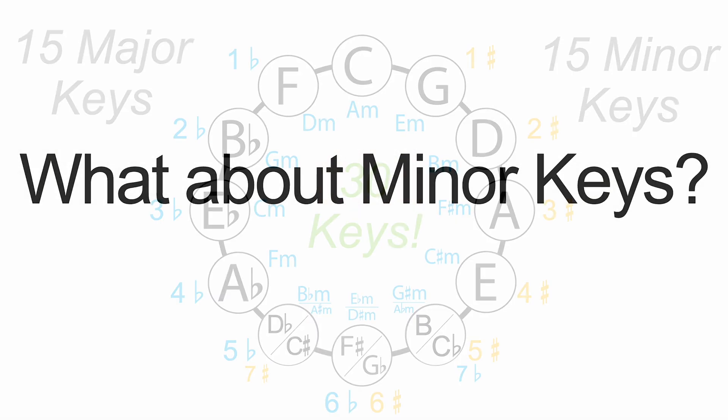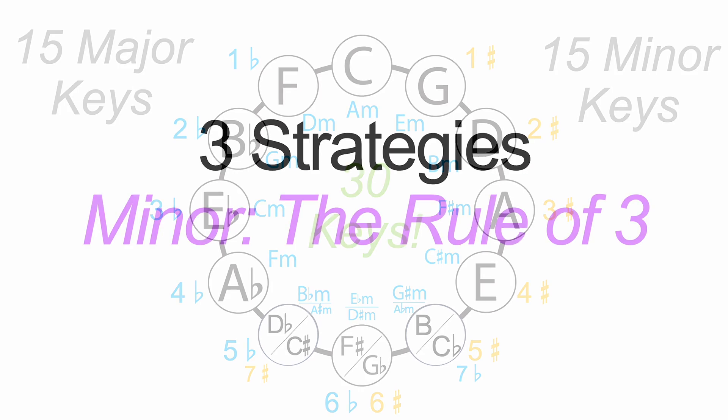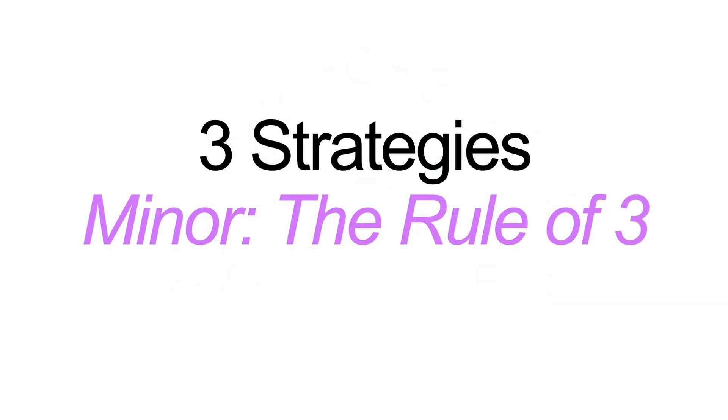With minor keys, we have a few tricks, because there are 15 minor keys to think about. I can guarantee everyone is more comfortable with major keys than they are with minor keys, especially when you get to some of the lower minor keys like A sharp minor, D sharp minor, and G sharp minor — we don't play in those as often. We don't have a G sharp major or D sharp major, thankfully. So I have three strategies for minor keys, and I'm going to call this the rule of three, because the number three is going to pop up quite a lot.